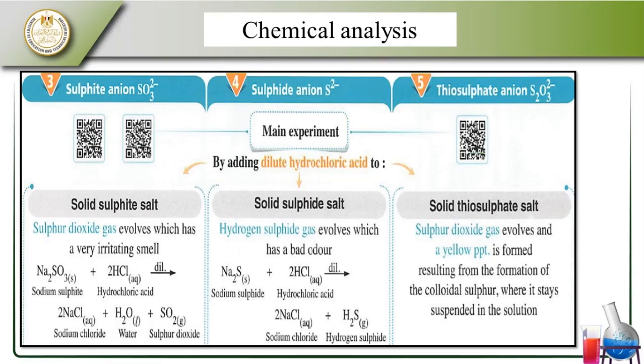Looking at the sulfite reaction: it gives sodium chloride and hydrogen sulfite. With the sulfite salt, sulfur dioxide gas evolves. A yellow precipitate is formed — this is from the formation of colloidal sulfur. Hydrogen sulfite gas evolves at the mouth of the test tube.